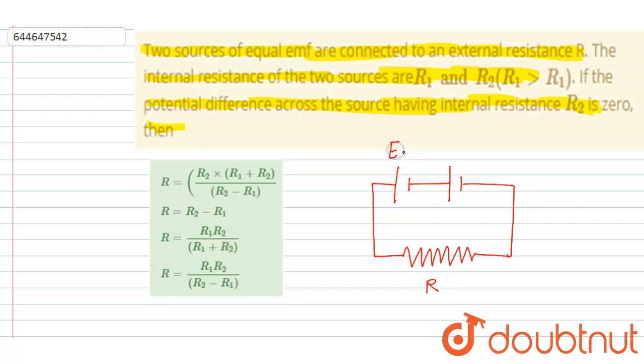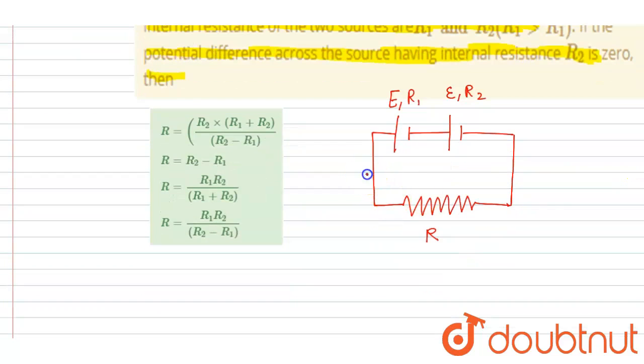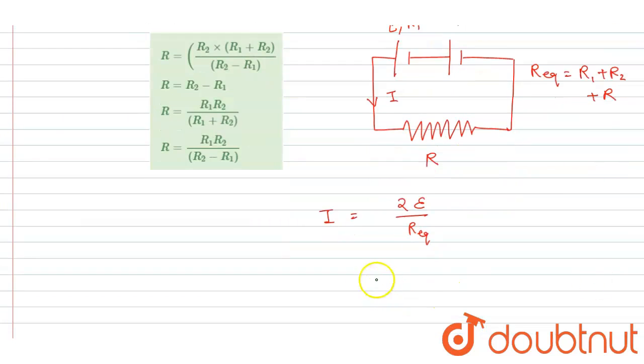Now if I write down the current I, it will be equal to 2E by R equivalent. R equivalent, you can see, it will be R1 plus R2 plus load resistance R. So I will write 2E upon R equivalent, R1 plus R2 plus R.